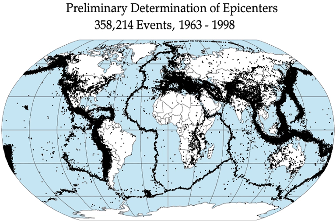Tsunamis are long-wavelength, long-period sea waves produced by the sudden or abrupt movement of large volumes of water, including when an earthquake occurs at sea. In the open ocean the distance between wave crests can surpass 100 km, and wave periods can vary from 5 minutes to 1 hour. Such tsunamis travel 600–800 km per hour depending on water depth. Large waves produced by an earthquake or a submarine landslide can overrun nearby coastal areas in minutes. Tsunamis can also travel thousands of kilometers across open ocean. Most destructive tsunamis are caused by earthquakes of magnitude 7.5 or more.